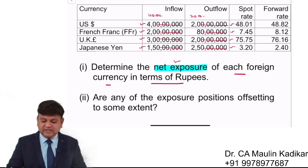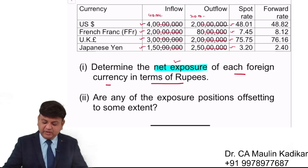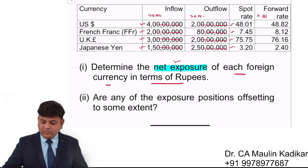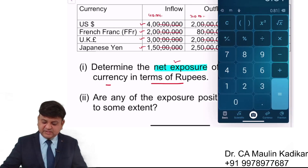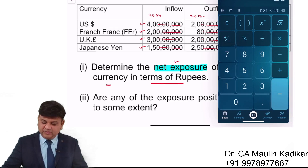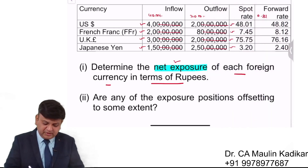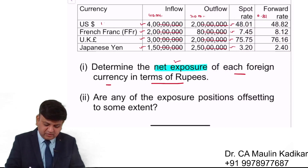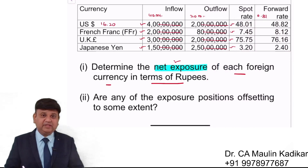In the forward rate, listen carefully — the dollar currency appreciates. How much is it? 81. So what will happen? 81 per dollar into 20 million — what will happen? 16.2 million. That is what we understand.